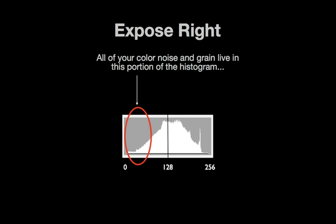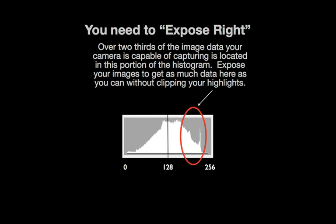The first is about digital noise and grain. The majority of digital visual noise and grain, that is the unwanted color specs and the film-type graininess that you don't want in your image, live on the left-hand side of the histogram in your shadow areas. Thus, if you're intentionally underexposing your images to avoid clipping your highlights, you're actually decreasing the quality of your image by increasing the grain and visual noise in that image.